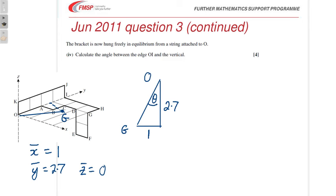So they want the angle between the edge, OI, which is the y-axis, and the vertical, which will be OG. But if you look at, you can see in the diagonal we've drawn there, and we turn it into this triangle here, the angle they want, theta, is this one in here, and tan theta will be the x-coordinate of the centre of mass over the y. 1 over 2.7. So let's just finish that off. Tan theta equals 1 over 2.7,